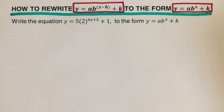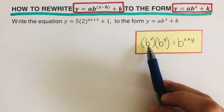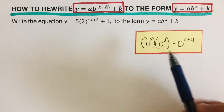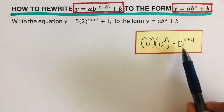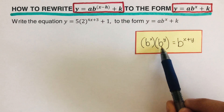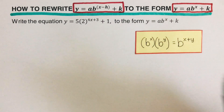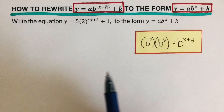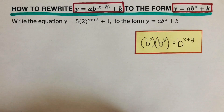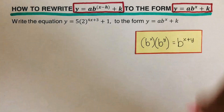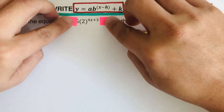Before we jump into this example, we remember this property of exponents when two bases are the same. We can write the common base b and then just add the exponents.